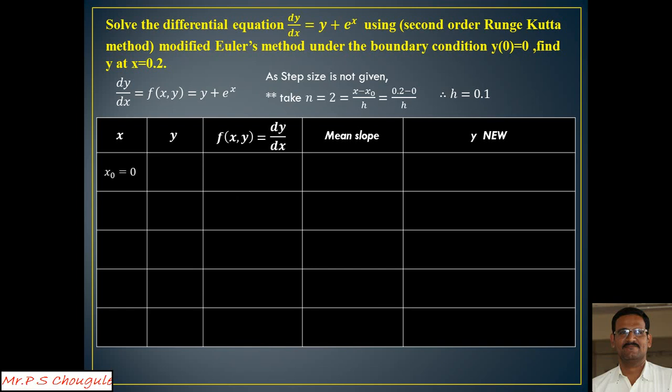The basic initial conditions are x0=0 and y0=0. We need to find the value of f(x,y) at x0, y0, which comes out to 1. Since we have only one slope initially, we keep the mean slope blank. The value of y1 can be found using Euler's formula: y1 = y0 + h·f(x0, y0). Putting in the values: y0=0, h=0.1, and f(x0,y0)=1.